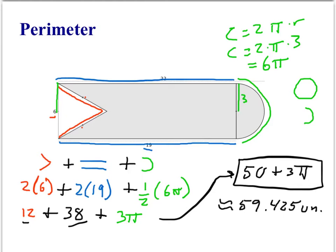So that's the perimeter. And just to recap, we took the two little pieces of the triangle, plus the two lengths of the rectangle, plus half the circumference of the circle. So that's the perimeter.